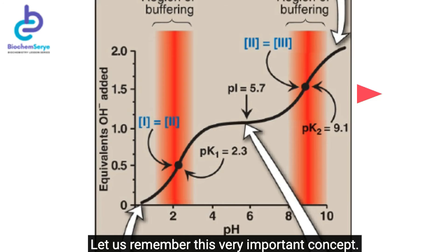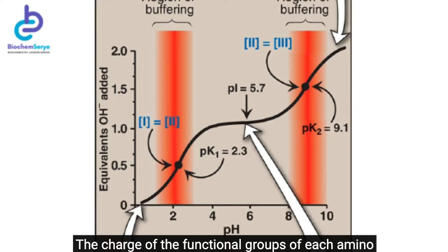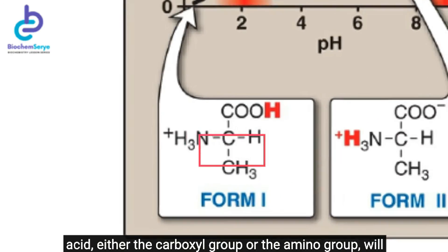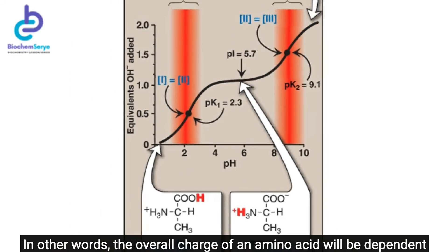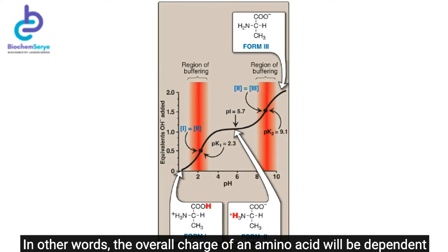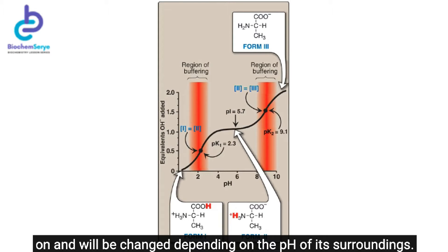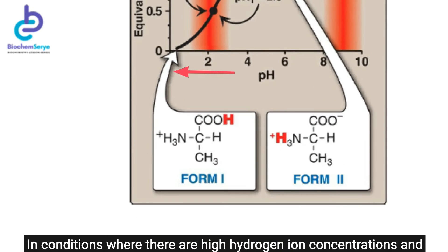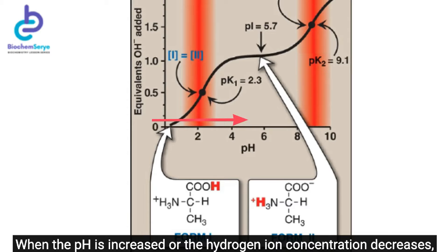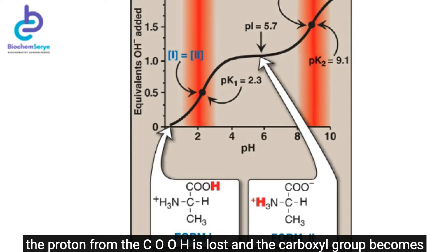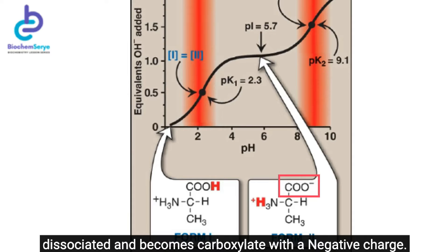The charge of the functional groups of each amino acid — either the carboxyl group or the amino group — will depend on the overall pH of the solution. In conditions of high hydrogen ion concentration and low pH, the carboxyl COOH group remains undissociated. When the pH is increased or hydrogen ion concentration decreases, the proton from the COOH is lost and the carboxyl group becomes dissociated, becoming carboxylate with a negative charge.